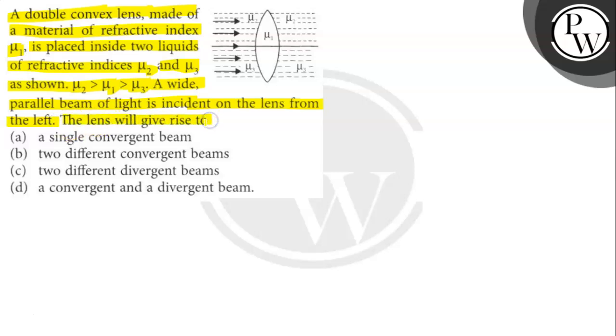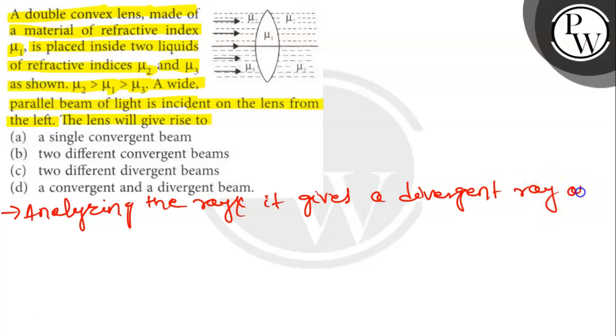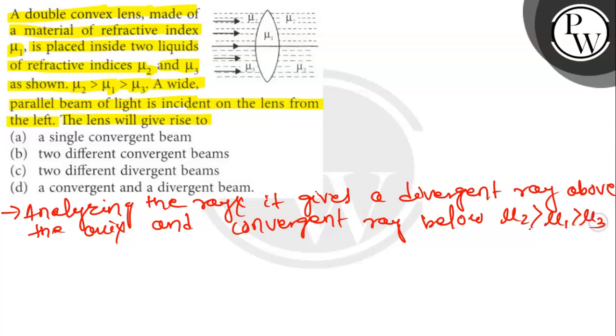The lens will give rise to which one? Let's find out. So analyzing the rays, it gives a divergent ray above the axis and convergent ray below. mu2 greater than mu1 greater than mu3.